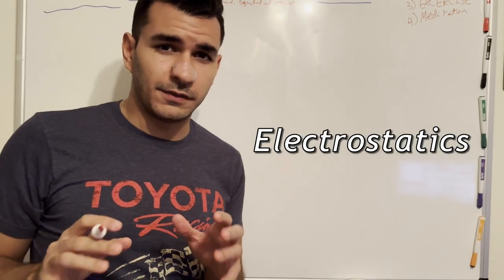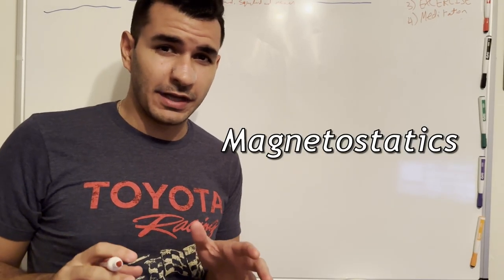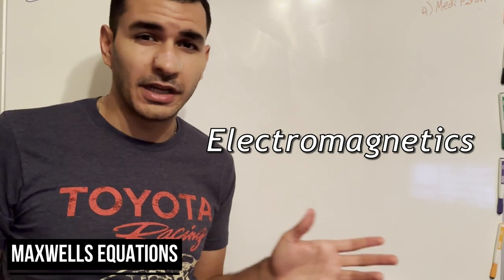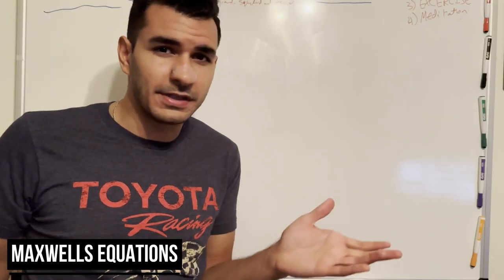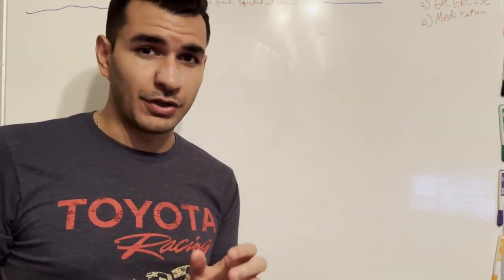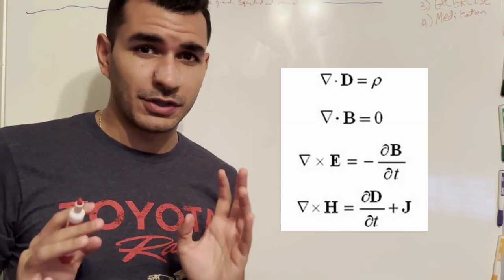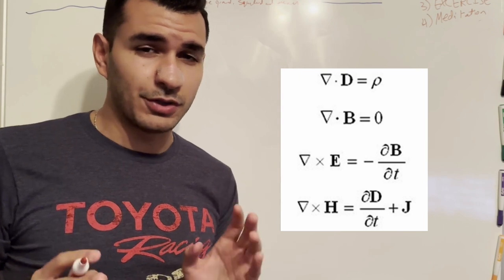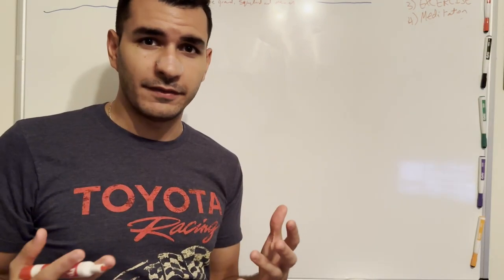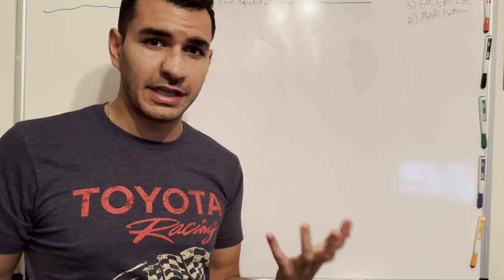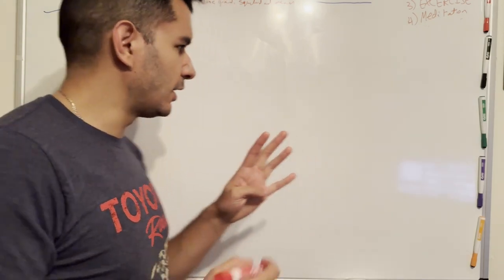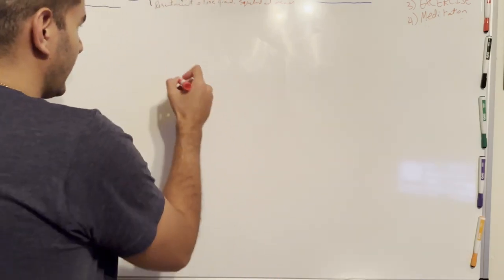Electrostatics versus magnetostatics versus electrodynamics versus electromagnetics — what do these things even mean? The only way to fully understand what they mean is to understand Maxwell's equations. Maxwell's equations are essentially four equations that describe the behavior of electricity and magnetism, at least the way we see it.